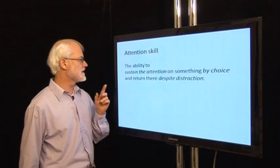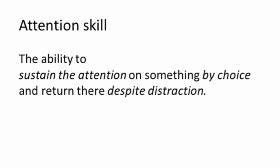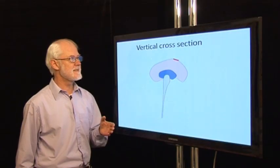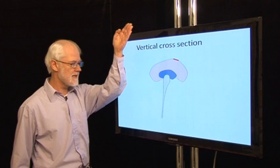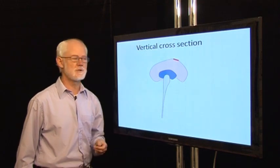The attention skill is the ability to sustain attention on something by choice and to return there despite distraction. The part of the brain that needs to be in control is called the executive, and so we call attention an executive function. For this, we need to see the brain in a slightly different light, a vertical cross-section through it.